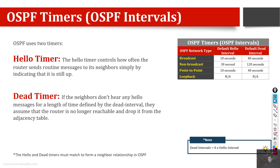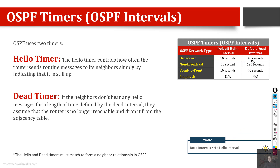For broadcast and point-to-point interface types, the default hello interval is 10 seconds and the dead interval is 40 seconds. If the OSPF interface type is non-broadcast, it is 30 seconds and 120 seconds respectively. The dead interval is always 4 times the hello interval — so 10 × 4 = 40, and 30 × 4 = 120. For loopback interfaces, there is no need for a hello interval since it is just a local interface and does not communicate on physical interfaces.